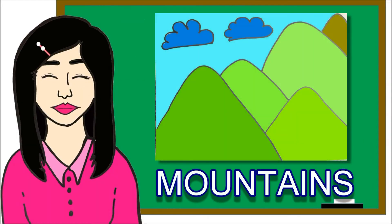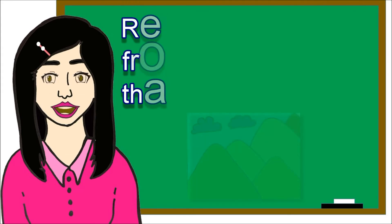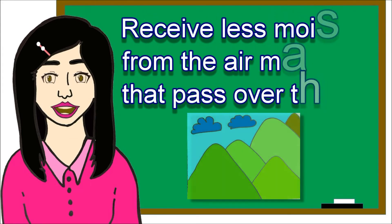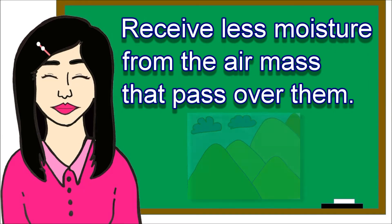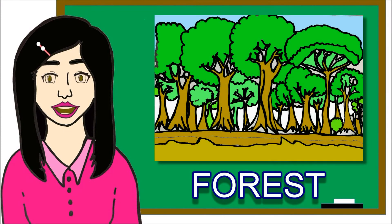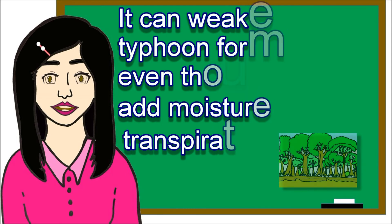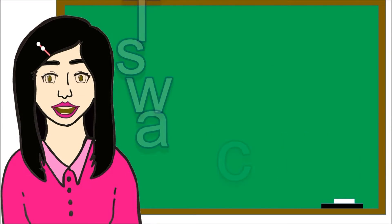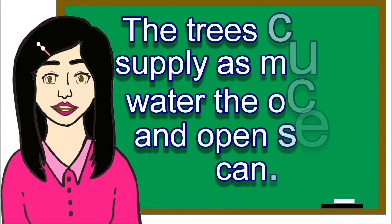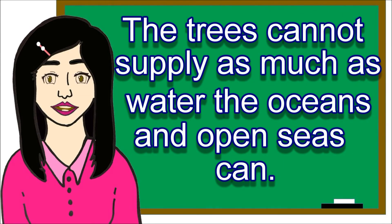Land masses like mountainous areas receive less moisture from the air mass that passes over them. This is because as the trade winds pass over large mountains, the moisture has been scraped off from them. For land masses like forests, they can weaken typhoon formation even though they add moisture to the environment during transpiration. The trees in a forest cannot supply as much water as the oceans and open seas can.